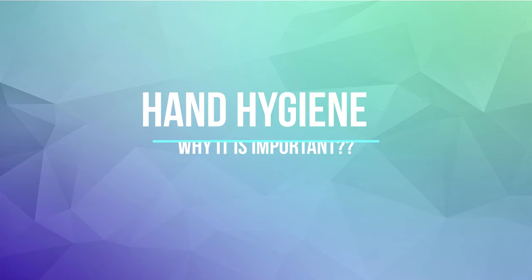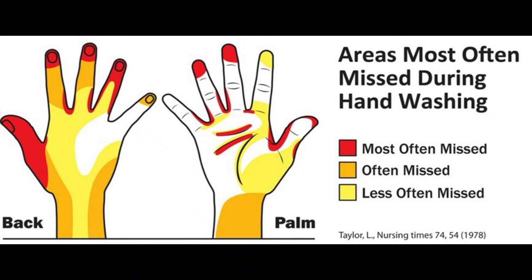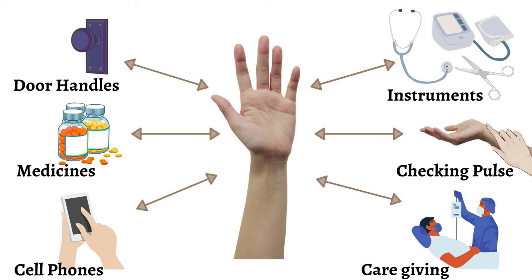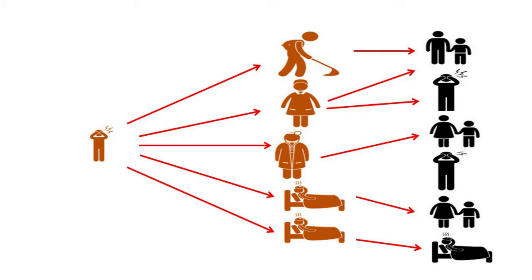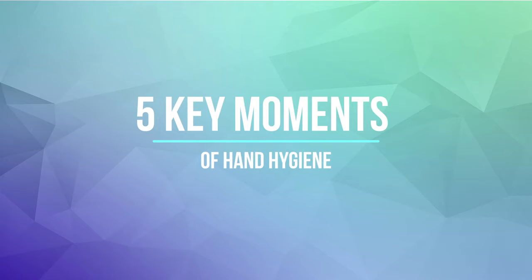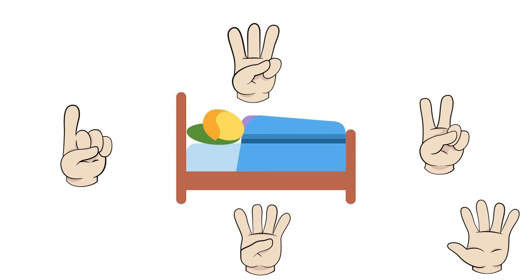There are numerous studies which tell about the missed areas if hand hygiene is done inappropriately. Certainly there are various areas which we touch every day, and hence it can transmit microorganisms to people and the environment. WHO has described five key moments of hand hygiene.